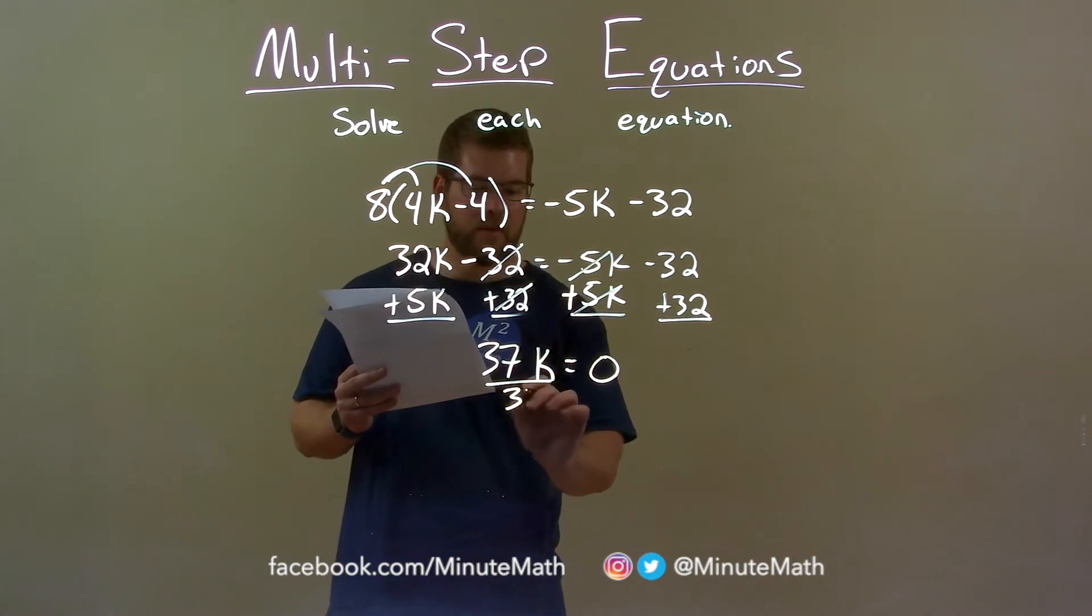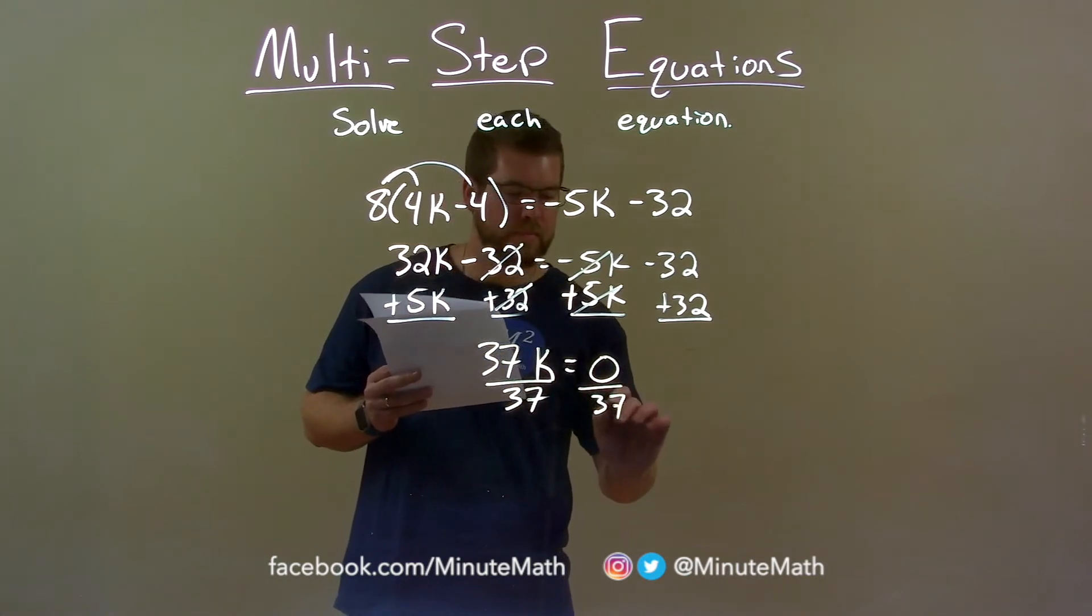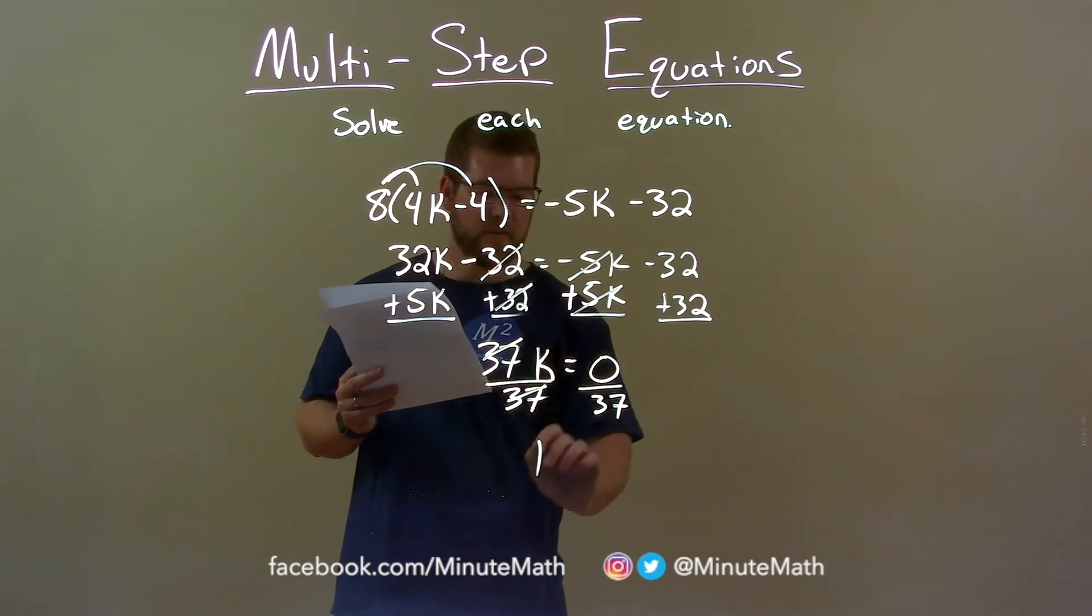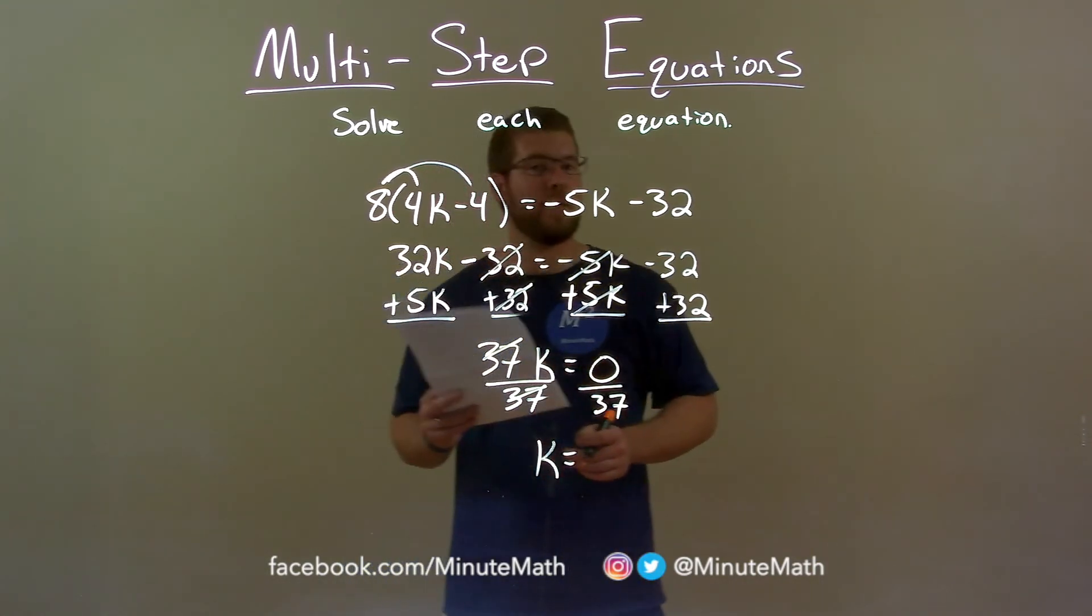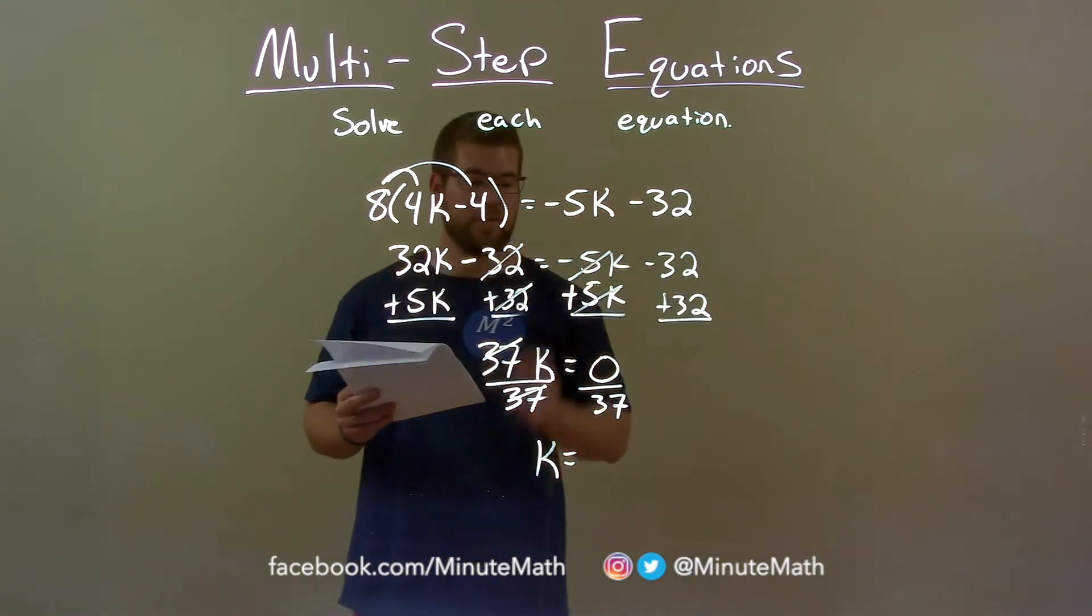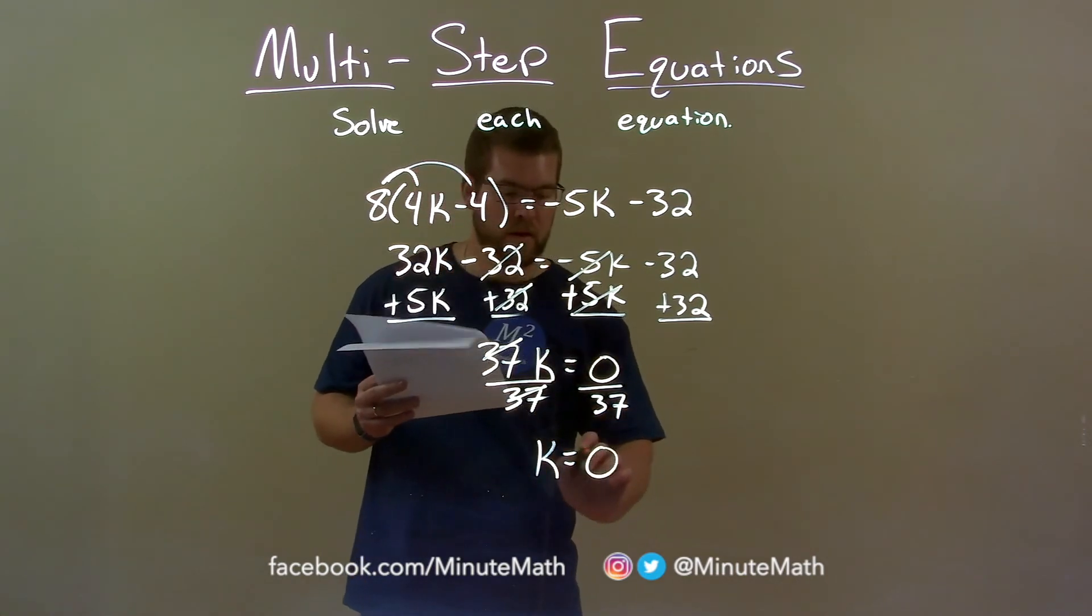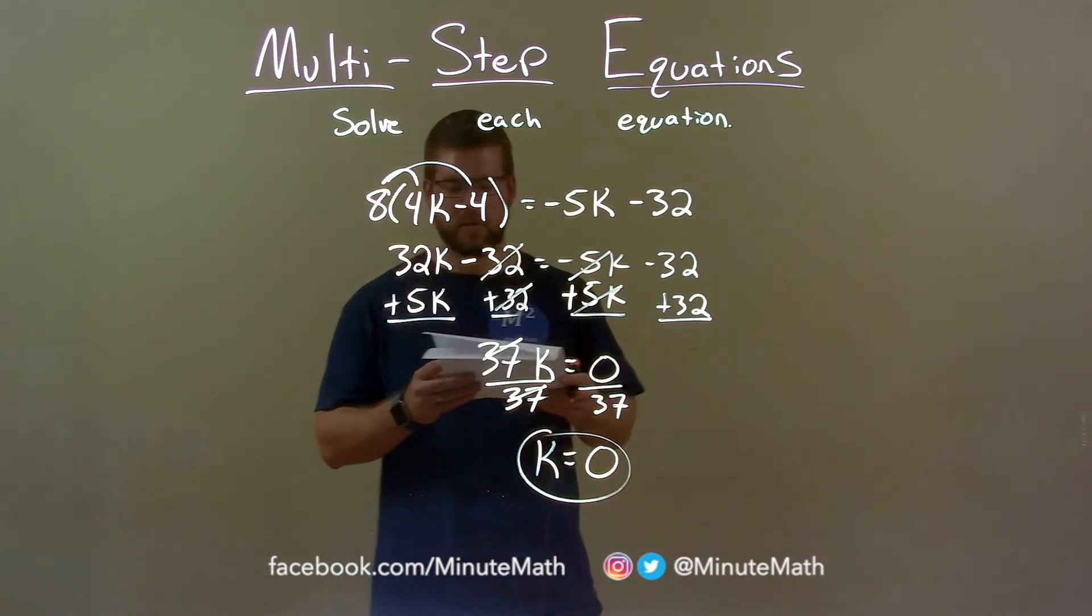Divide both sides by 37. 37 is canceled, and k is by itself now. And remember, 0 divided by anything is 0. So 0 divided by 37 is 0. So our final answer here is k equals 0.